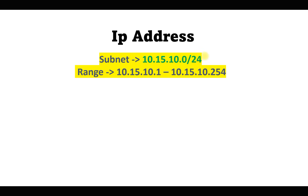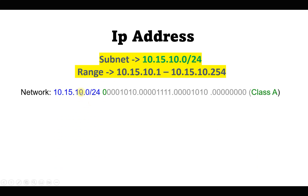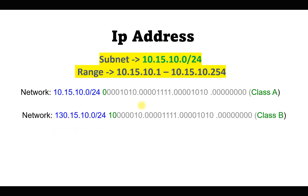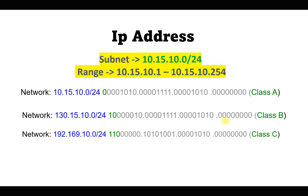If I ask you to calculate the range for a given IP address — the subnet mask, the first usable IP, the last usable IP, how many IP addresses the subnet has, or which class it belongs to — for a /24 subnet you could answer all of these easily. I'm going to show you how to do all of these things, including for /24 subnets across different classes.